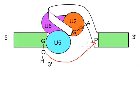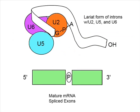In the second transesterification reaction, the 3' hydroxyl group of the free 5' exon attacks the 5' phosphate of the first base in the second exon. The lariat leaves bound to U2, U5, U6, and the product formed is the mature mRNA.